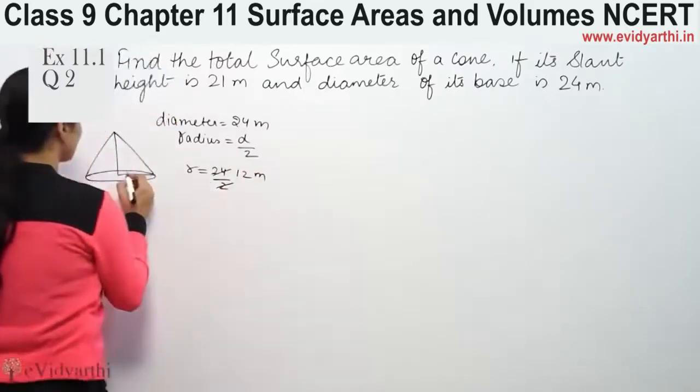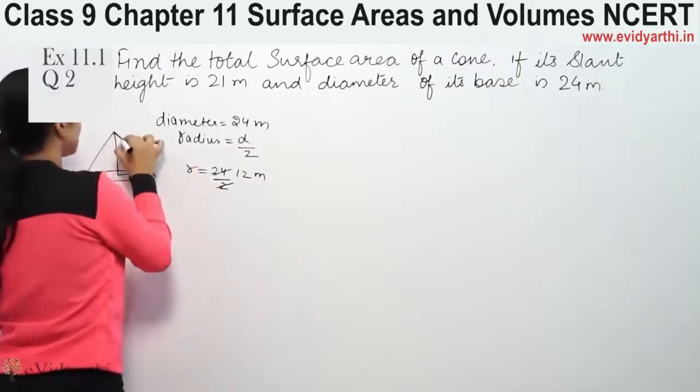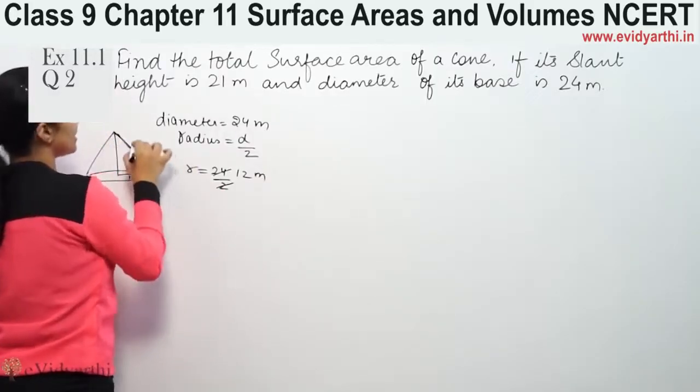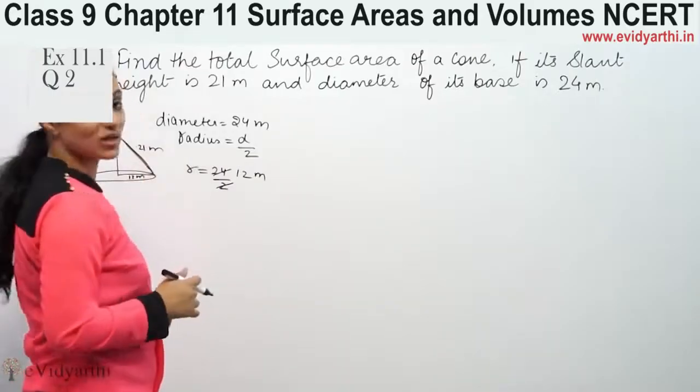So now radius given is 12 meters. The slant height, that means this is 21 meters. Now we have to find its total surface area.